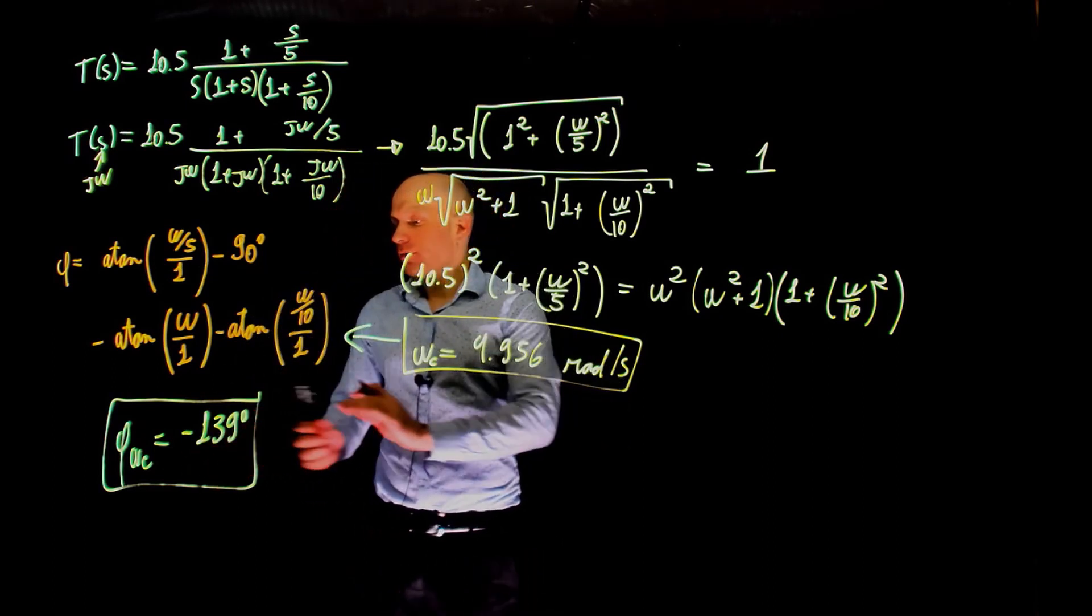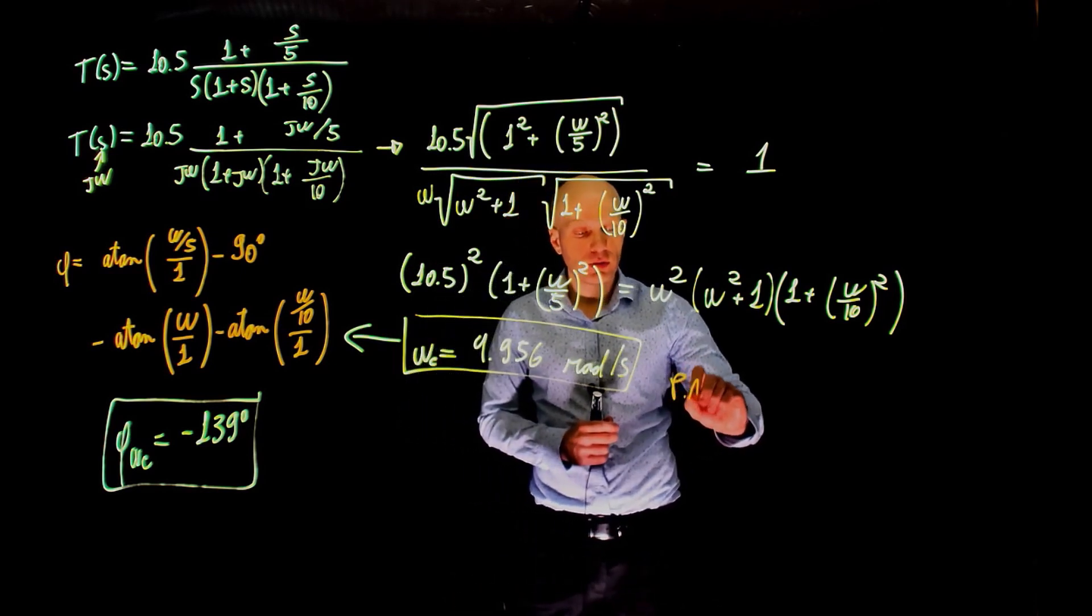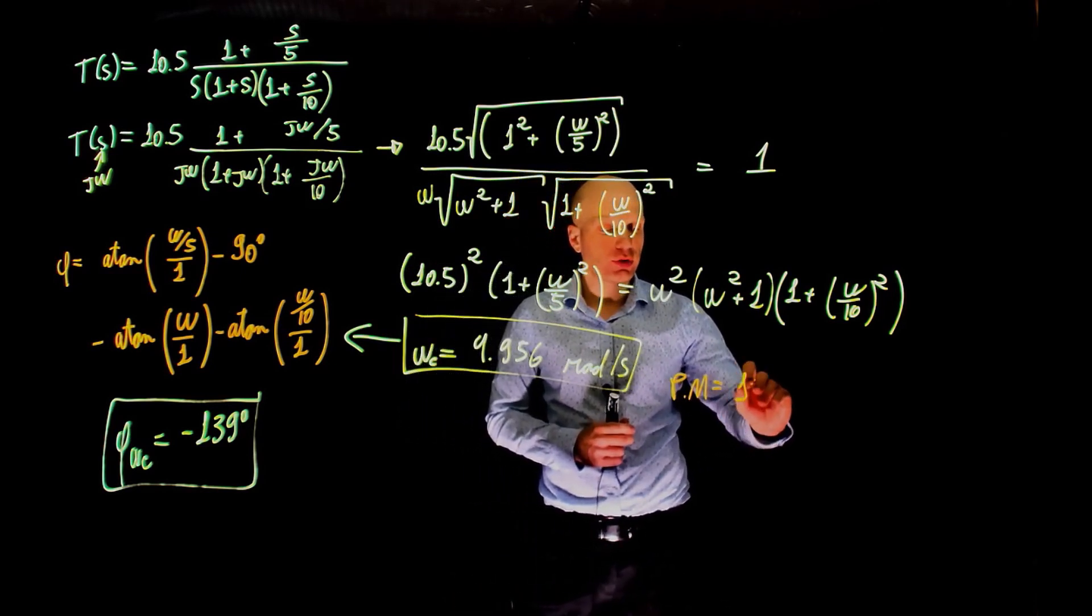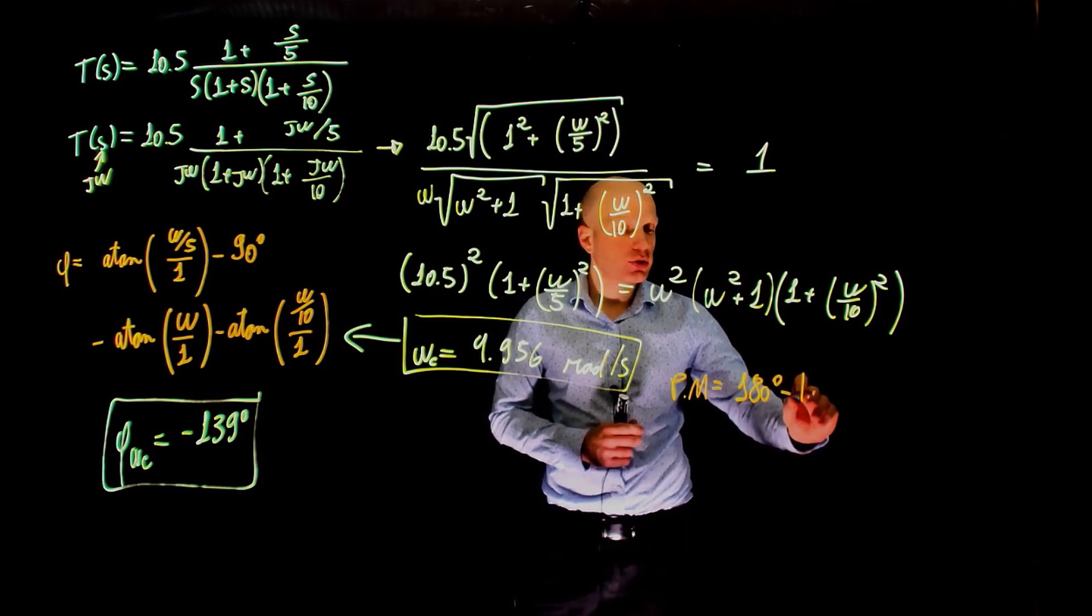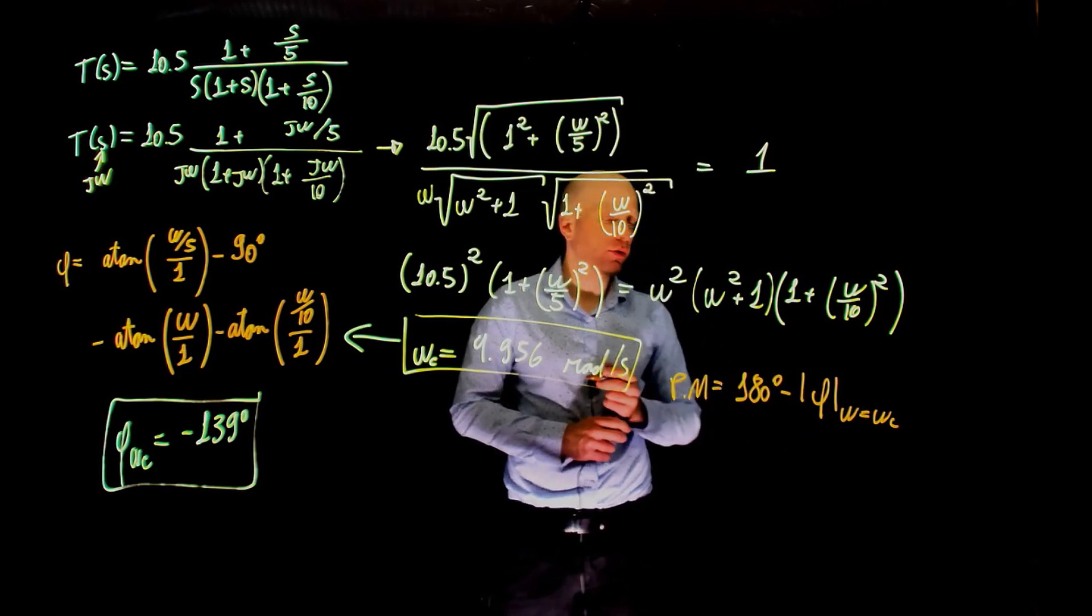Very well, now that we have the phase, we can calculate the phase margin. The phase margin is defined as 180 degrees minus the magnitude of the phase of the transfer function when the frequency is the crossover frequency.